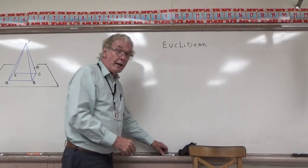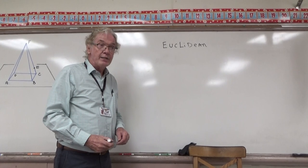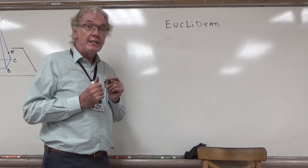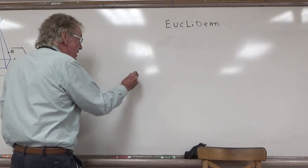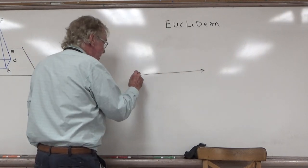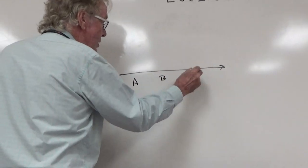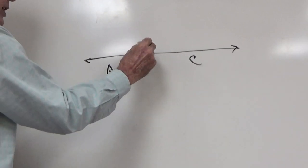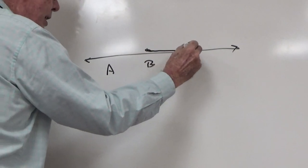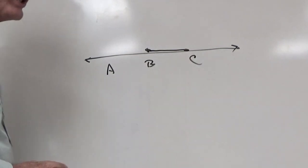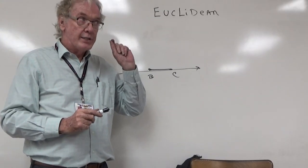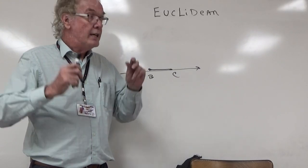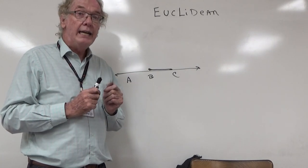The first defined term is line segments. A line segment is a subset of a line — a part of a line — with two distinct endpoints. If I had this line ABC, I name a line with just two points, so this would be line AC. If I wanted the part that starts at B and stops at C, I would call that segment BC. The definition of a segment is a subset of a line with two distinct — distinct meaning different — endpoints.